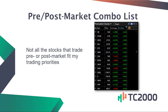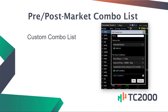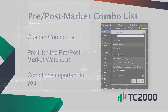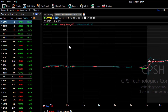Not all the stocks that trade pre and post market fit my trading personality and priorities. That's where the custom combo list comes in. It allows you to pre-filter the pre and post market watch list to qualify stocks by major conditions that you find important. Here's how to build one.